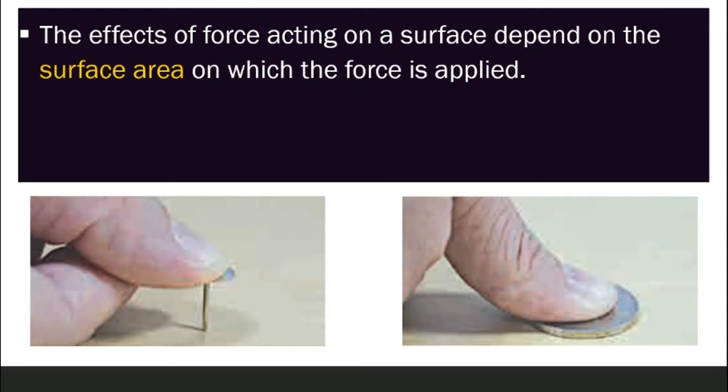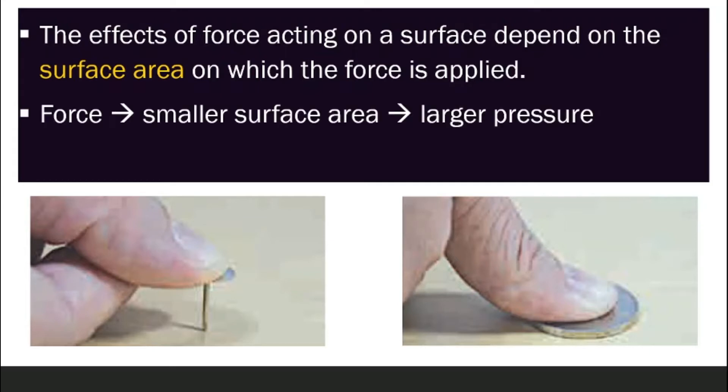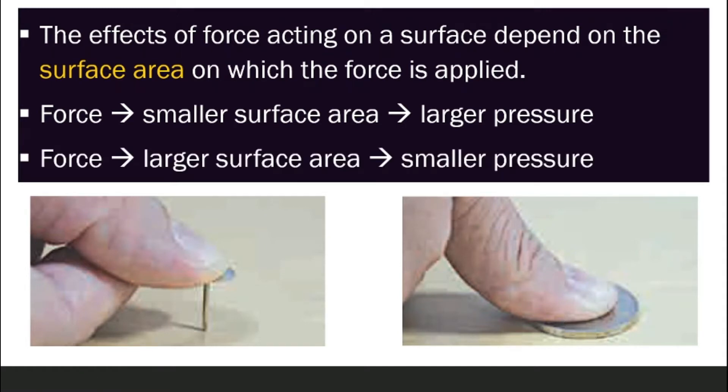This is because the effects of force acting on a surface depends on the surface area. If the force is applied on a very small surface area like this thumbtack, it will experience a very large pressure. But if the same amount of force is applied on a coin which has a much bigger surface area, then the pressure experienced will be much smaller. Which means if the surface area is big, the pressure will be small. And if the surface area is small, the pressure will be big. They are the other way around.